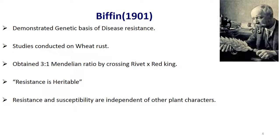Coming to the introduction to host plant disease resistance. Three scientists' contributions are important: Biffin, HF Floor and Van der Plank. In 1901, Biffin demonstrated the genetic basis of disease resistance in wheat. He obtained a 3:1 Mendelian ratio by crossing rivet into red king wheat. He proved Mendelian genetics in diseases, concluded that resistance is heritable, and that resistance and susceptibility are independent of other plant characters.